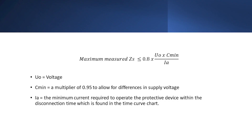Appendix 3 also explains that the maximum measured ZS must be less than or equal to 0.8 multiplied by that same calculation — in other words, 0.8 multiplied by the values in table 41. This is due to the operating temperature of the cable when it is under load.